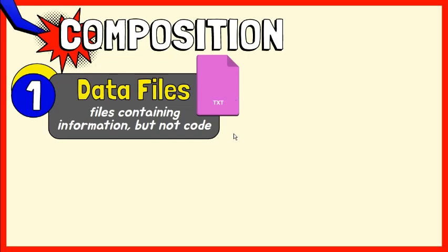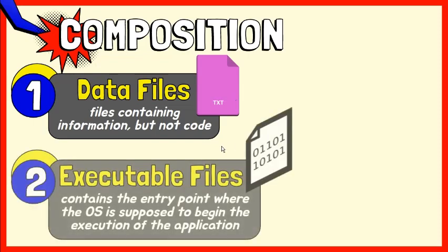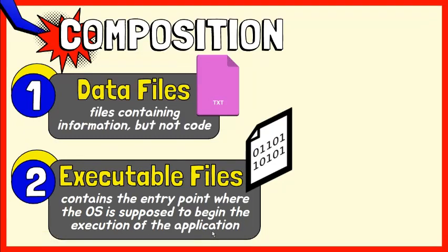In software compatible for Windows operating system, you would normally find at least a single executable file. An executable file contains the entry point, or the part in the code where the operating system is supposed to begin the execution of the application. Unlike a data file, an executable file cannot be read by humans because it's compiled. Compiling allows the computer to run and understand the program without the need of the programming software used to create it. Therefore, executable files have been processed and packaged and are ready to run on a computer.